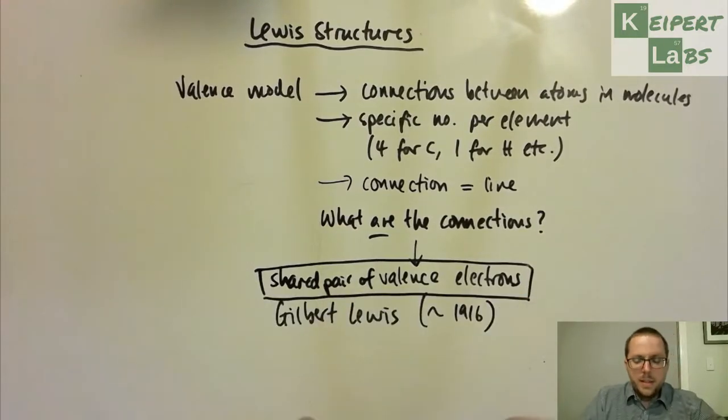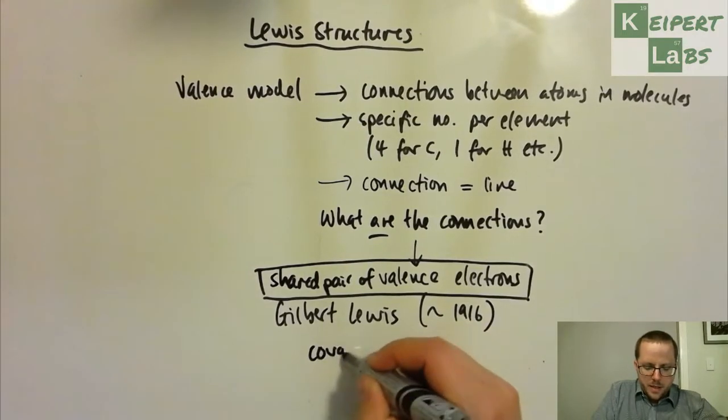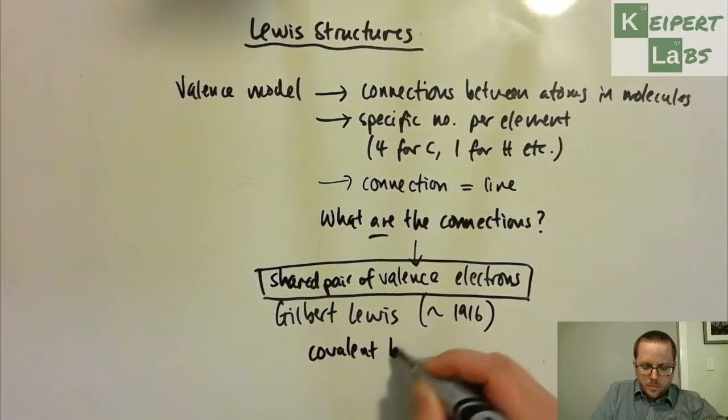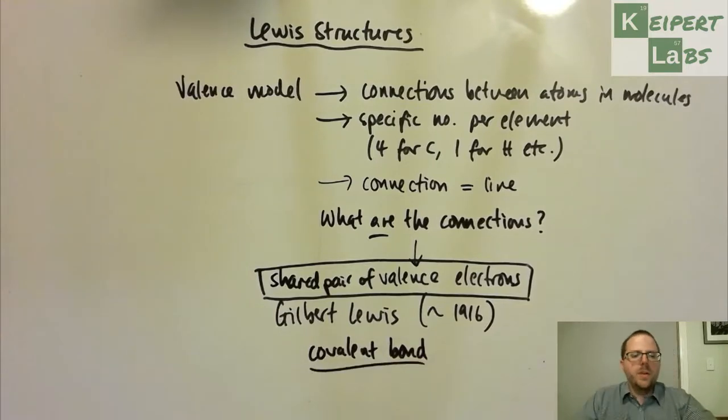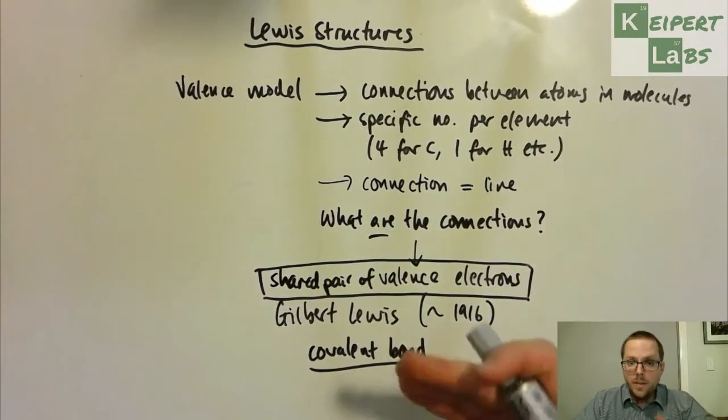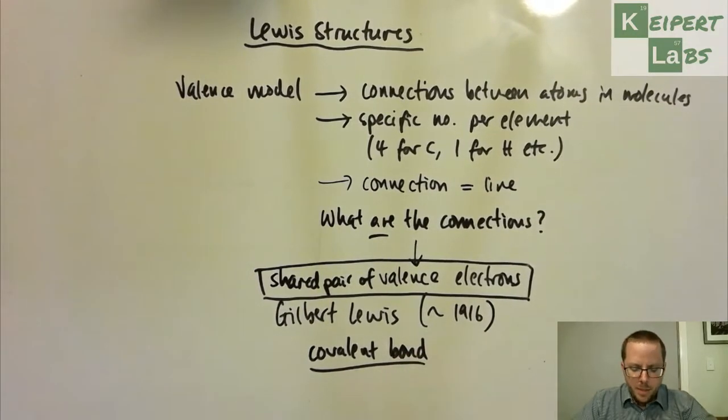So that these valence electrons that were shared between atoms, that one atom would bring one, the other atom would bring another, and there was a pair that would be shared between them that was the basis of this physical connection. And so this idea was what we call a covalent bond. So the connection between atoms being valence electrons from two atoms being shared, covalent electrons being shared, and which is what gives rise to the bonding.